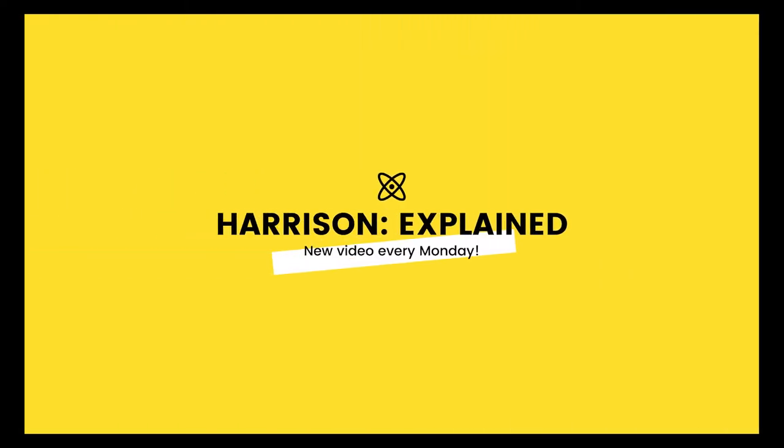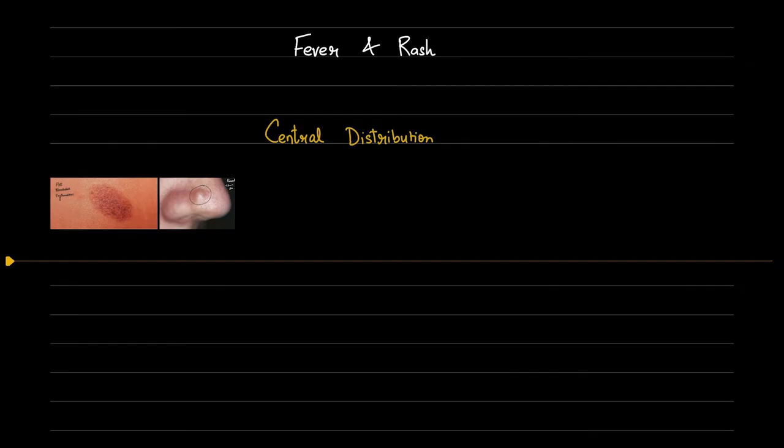Hello everyone, welcome back to another episode of Harrison Explained. Today we are going to discuss diseases which present with fever and rash. This is going to be the first video of this series where we will cover rashes with central distribution. Please note that this list is not exhaustive and that I have outlined only the commonly asked diseases which show up in the exams.